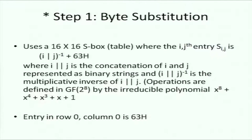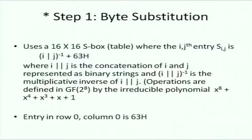So in byte substitution, for each of the 16 elements in the 128-bit block, you take those 8 bits, use the first 4 as a row index and the next 4 as a column index, look up the table, and substitute that byte for the original byte. This is done 16 times for the 4×4 array.